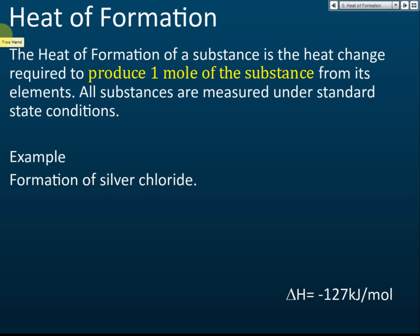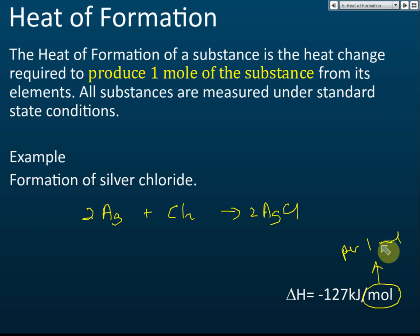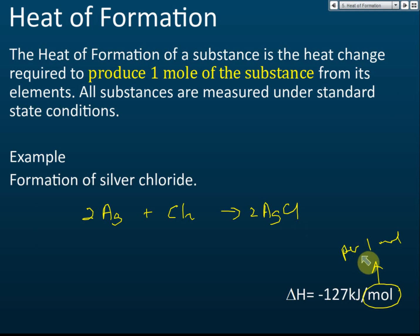For example, the formation of silver chloride: silver (Ag) reacts with chlorine (Cl₂) to form silver chloride. The delta H equals negative 127 kilojoules per mole. Per mole means per one mole of the substance produced, which is silver chloride. So this is the heat released when one mole of silver chloride is formed. Always ask: per mole of what?